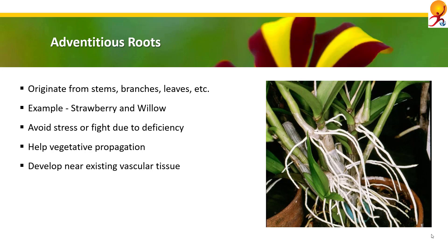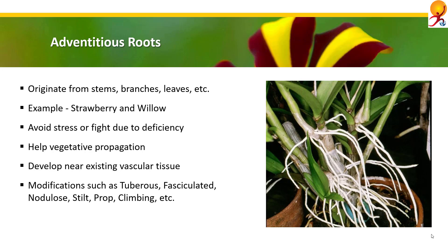There are several kinds of modifications: tuberous roots, which are without a definite shape — example sweet potato. Fasciculated or tuberous roots which occur in clusters at the base of the stem — example asparagus. Nodulous roots become swollen near the tips — example turmeric. Stilt roots arise from the first few nodes of the stem, penetrate obliquely down into the soil and give support — example maize or sugarcane. Prop roots give mechanical support to aerial branches; lateral branches grow vertically downwards into the soil and act as pillars — example banyan. Climbing roots arise from nodes, attach themselves to some support and climb over it — example money plant.